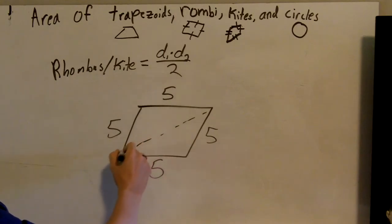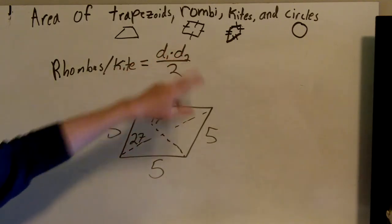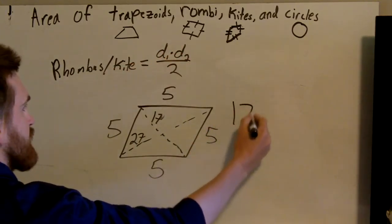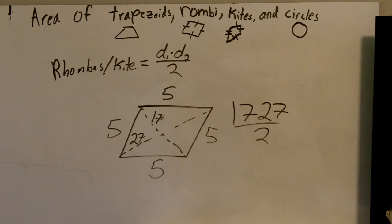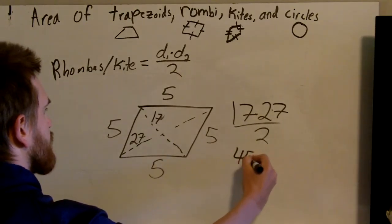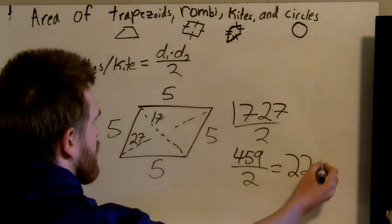And I have this diagonal is 27, we'll say. This diagonal is 17. So I just need to take diagonal one times diagonal two and divide it by two. So 17 times 27 divided by two. Let me take out my calculator since I don't know that one off the top of my head. I probably should have picked a number I could do, but it's okay.